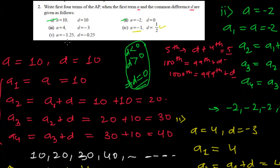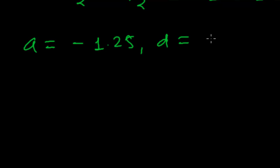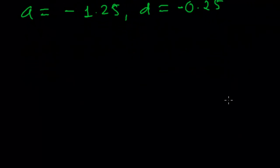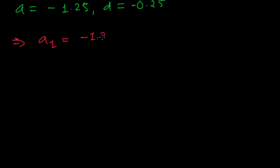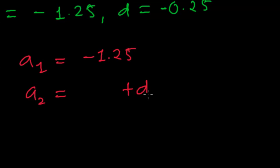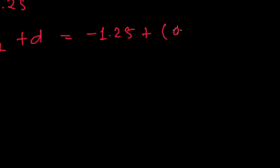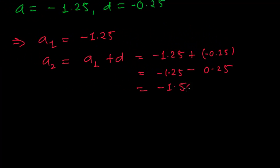The first term is negative 1.25, and the common difference is negative 0.25. So let me do this last one. The first term is negative 1.25, and the common difference is negative 0.25. So the first term is, of course, minus 1.25. And the second term is the addition of the common difference to the first term. Here the first term is minus 1.25, plus negative 0.25 — so minus 1.25 minus 0.25, that is minus 1.50.